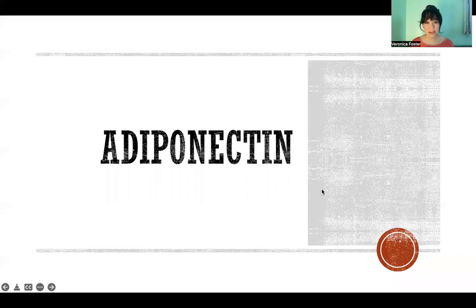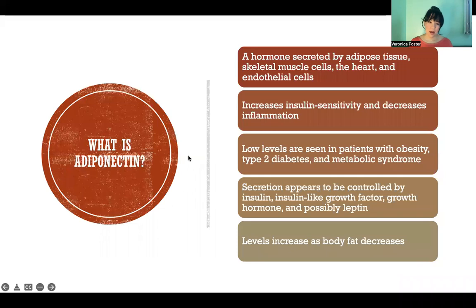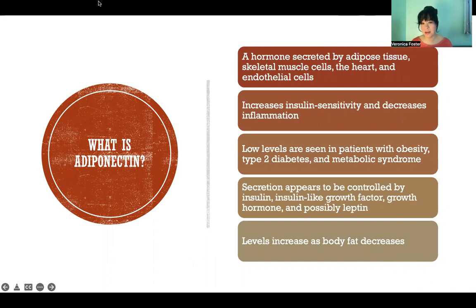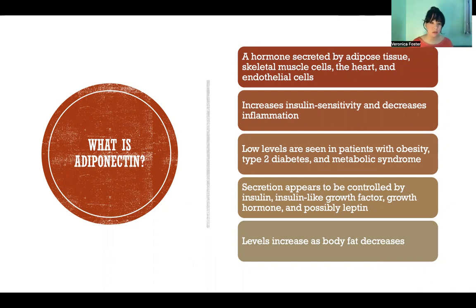Hello, in this video I'm going to tell you all about adiponectin. This is a hormone secreted by adipose tissue, also skeletal muscle cells, the heart, and endothelial cells. Its function is to increase insulin sensitivity and decrease inflammation.